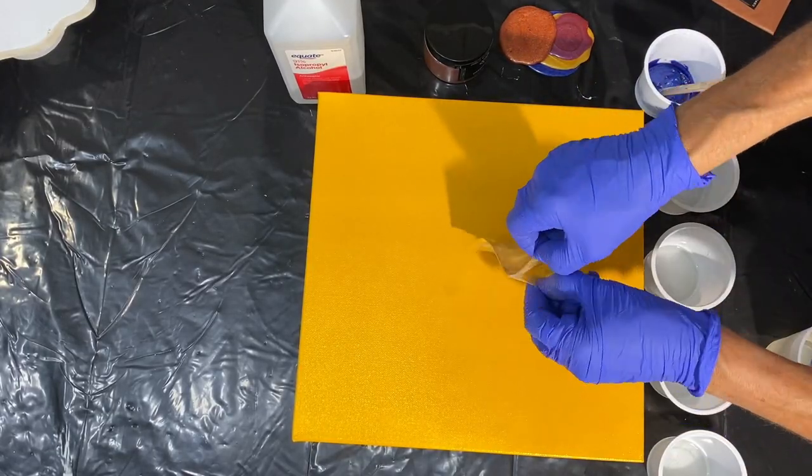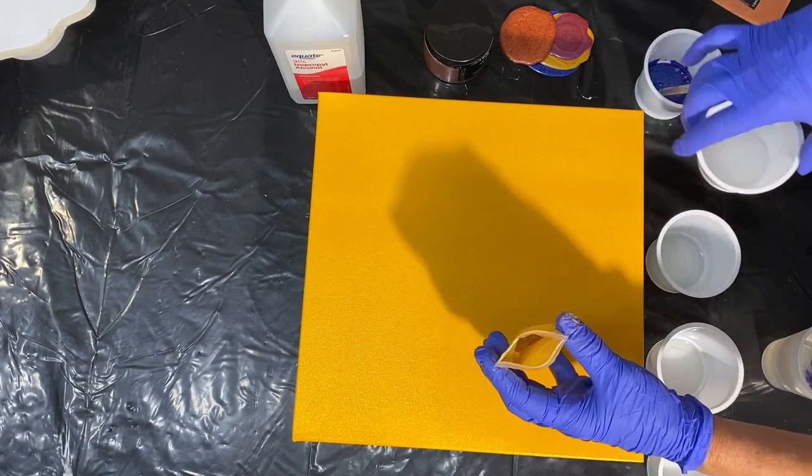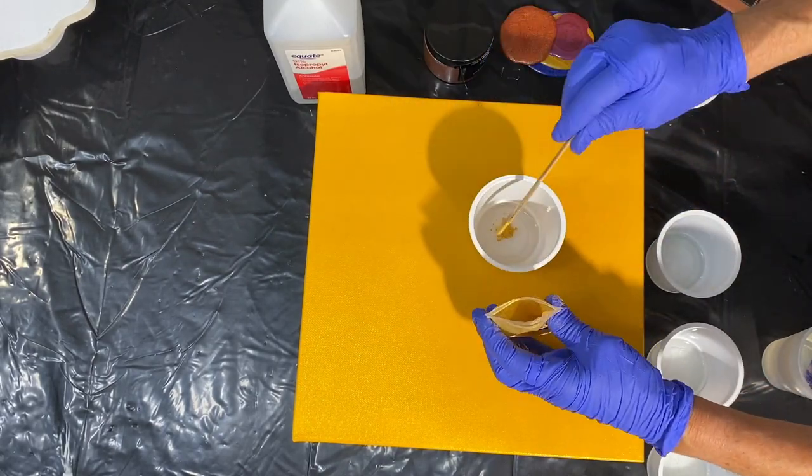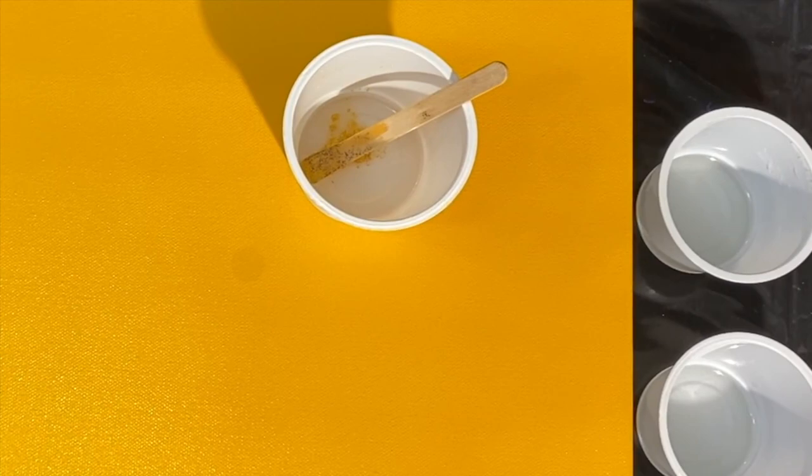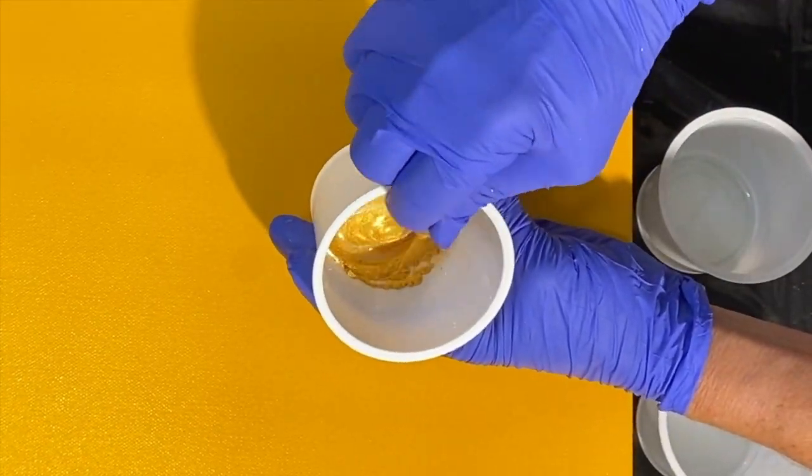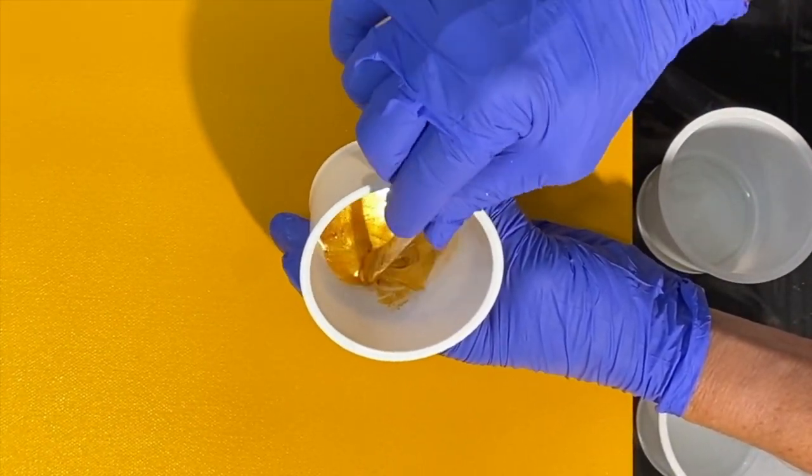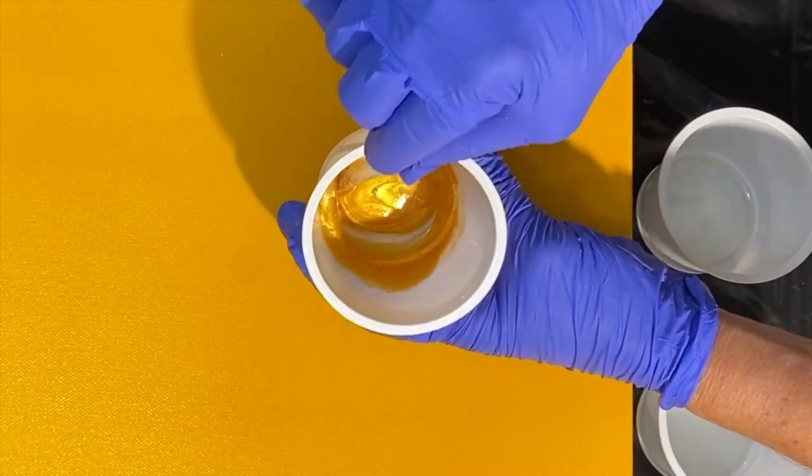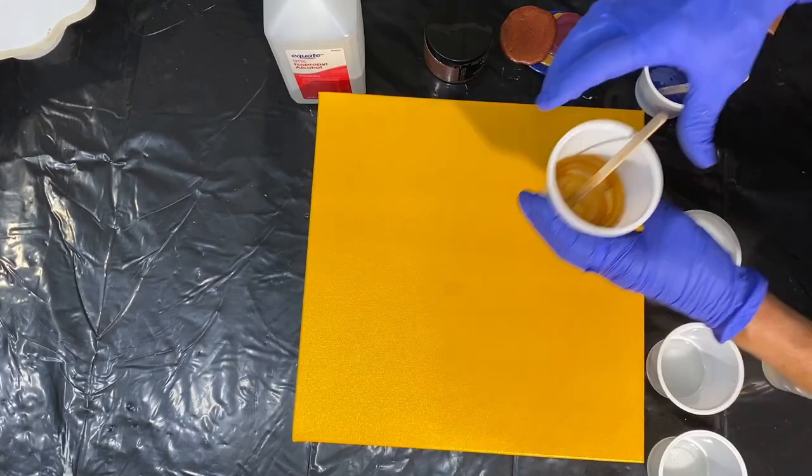Now we're going to move on to Black Diamond's Pure Gold. This is a beautiful, very light color of gold, and it just blends right into the resin. No problems, no clumping. Smooth as silk.